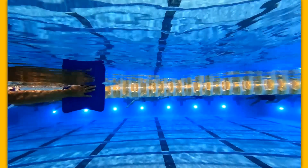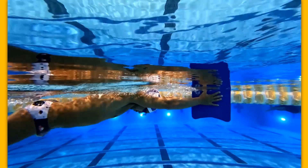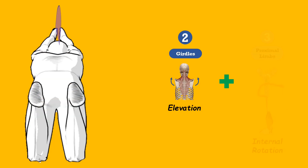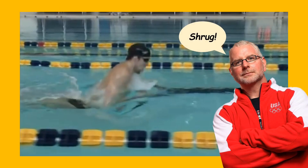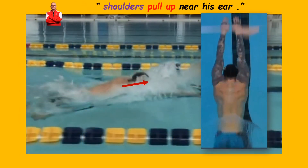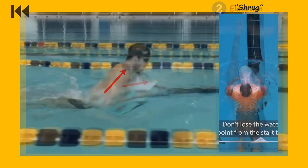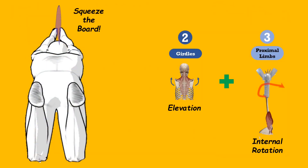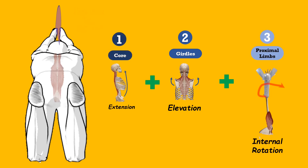The shark hold is performed by palming a kickboard to encourage two major components of shoulder abduction. First, elevation of the shoulder — in the words of Bowman himself, he does a very good job of having his shoulders pulled up near his ears. The cue of shoulder shrugging refers to shoulder elevation. Another tactile cue from doing the shark hold is internal rotation, which is the lesser known element that completes shoulder abduction. This is of course assuming that the kick mechanics are solid.